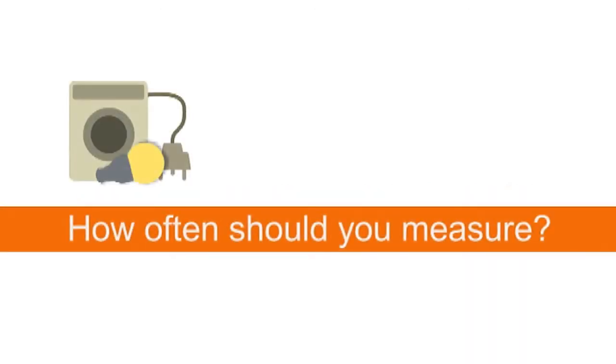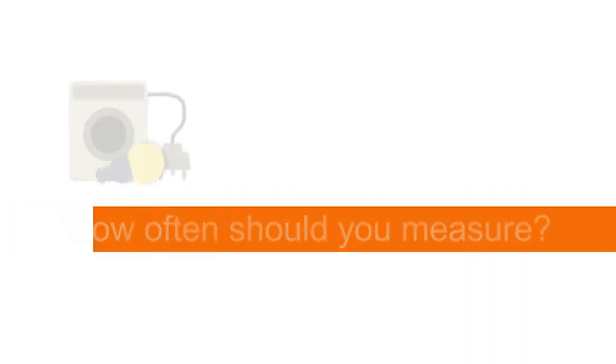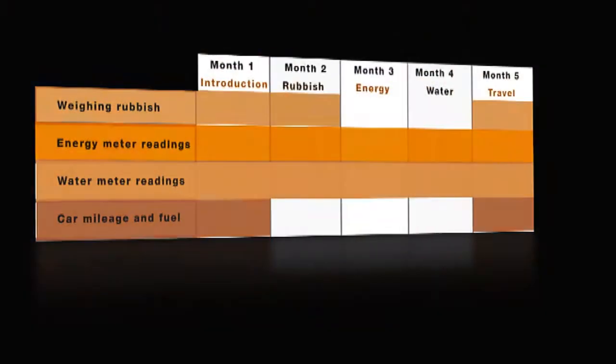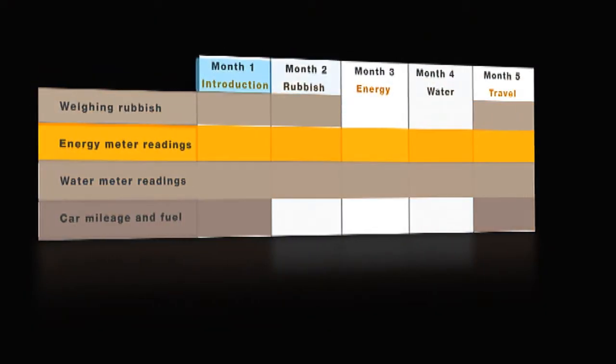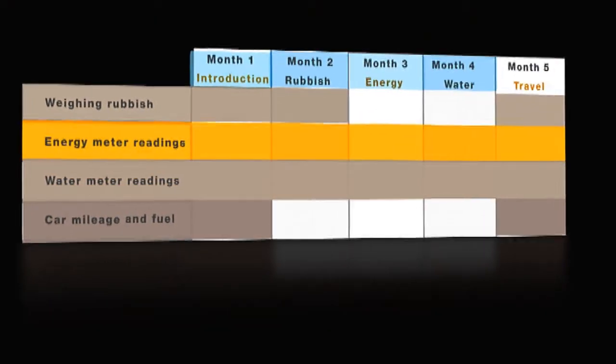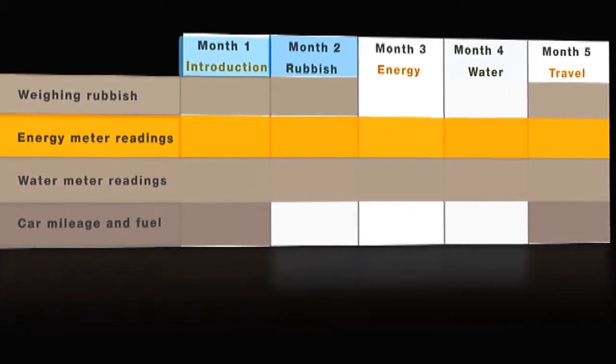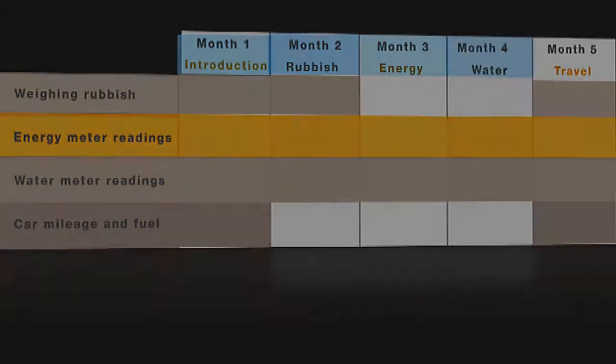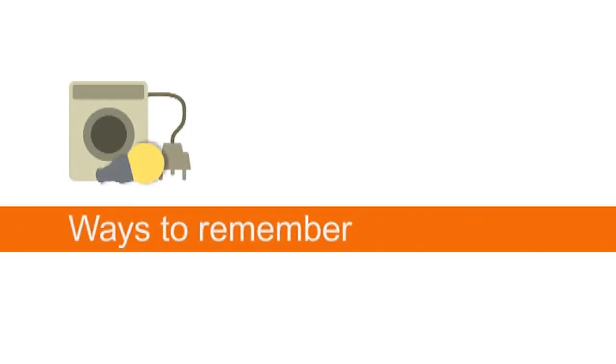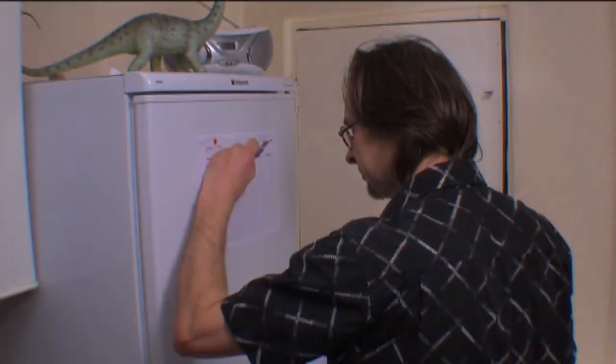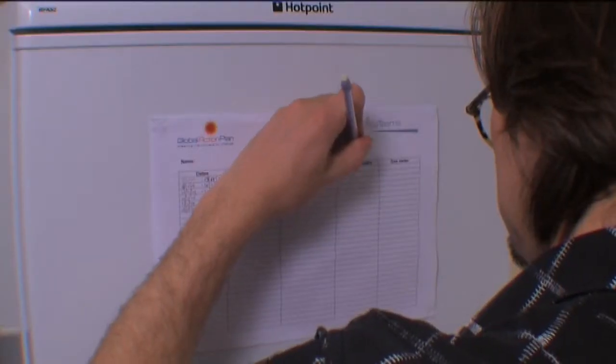How often should we measure? Read your meters on the date of each meeting, which are also known as milestones, throughout the whole program. Ways to remember: maybe set yourself a reminder on your calendar or Outlook, get your friends or family involved, or write a note on your fridge or a notice board.